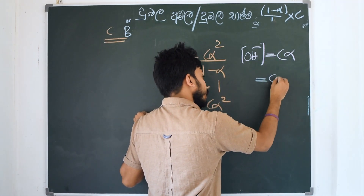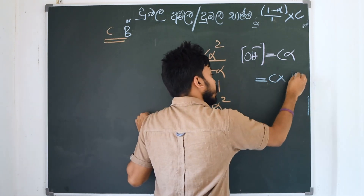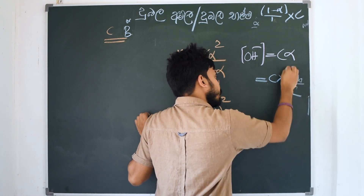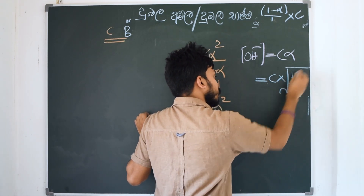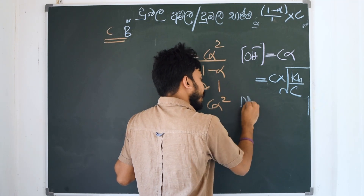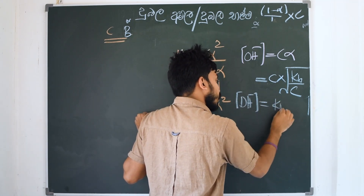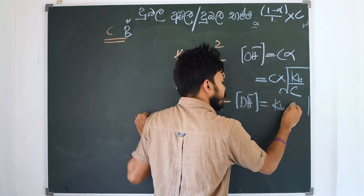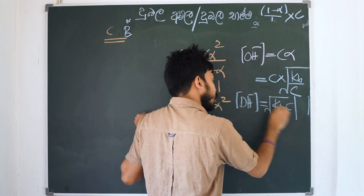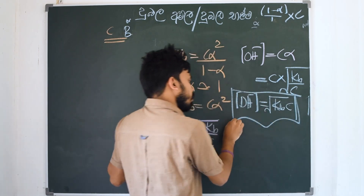Then C·alpha equals Kb and C equals C. When we do this, we use [OH−] = √(Kb · C).